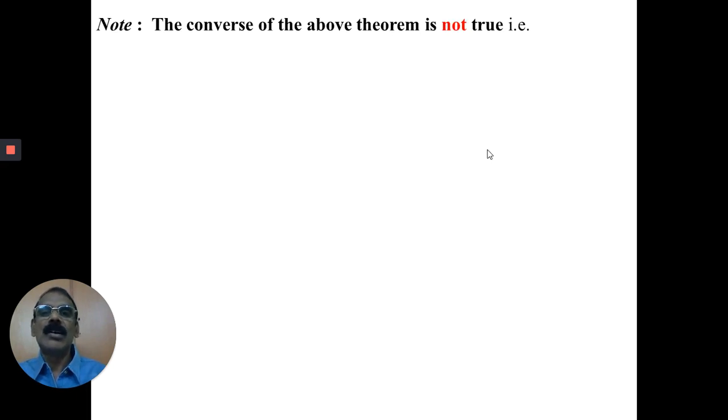Converse of Cauchy's first theorem on limits. Is it true? If it had been true, the statement would have been: sequence a_n converges to l if and only if the limit of (a1 + a2 + ... + a_n)/n is also l. But it is given only as 'if', not 'if and only if'. Only one part is true; the other part is not. Therefore, the converse of the above theorem is not true.